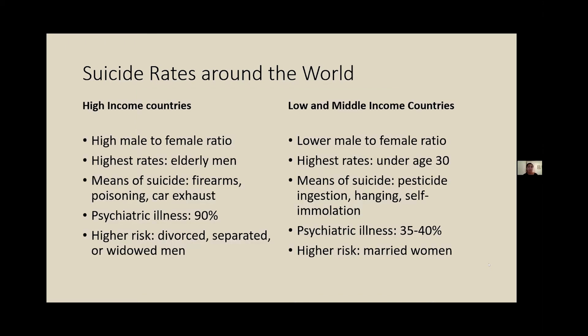Comparing suicide rates around the world based on whether it's a high income versus low and middle income country: in high income countries there is often a high male to female ratio, whereas in low and middle income countries the number of males versus females who commit suicide is more equal. In a high income country the ratio is on average about 3.5 to 1 male to female, and in lower and middle income countries the ratio is about 1.6 to 1 — still higher in males, but a lower ratio.